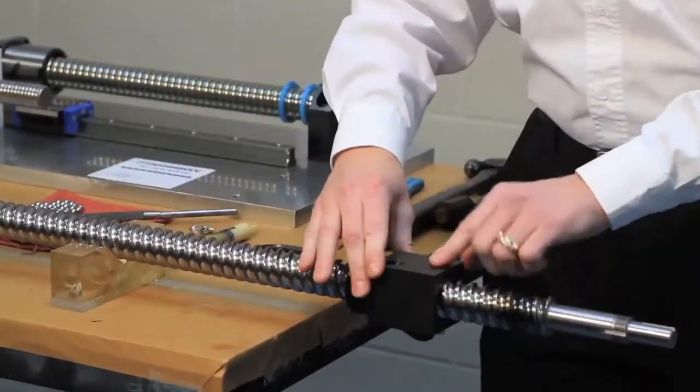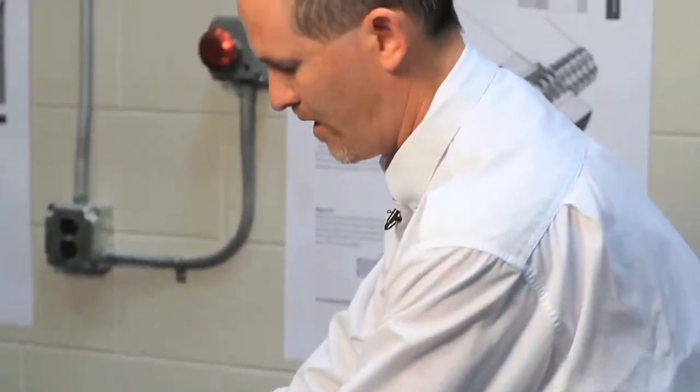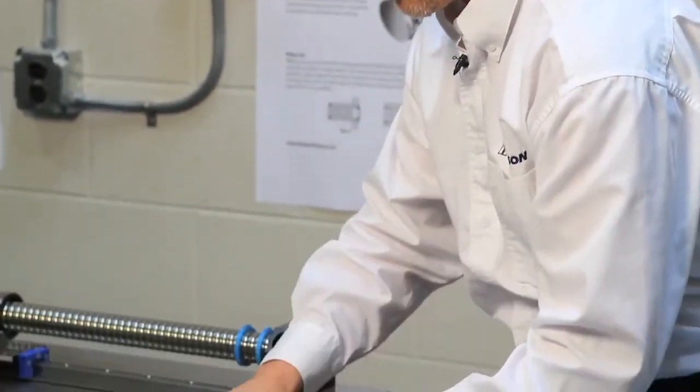Now once I get the ball bearings into the circulation path on the screw, we'll have some extra ball bearings here. And what we want to do is load them onto the return tube that we had taken out.